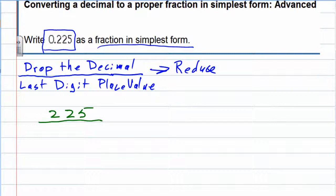225 that's my numerator and for the denominator I'm supposed to use the last digit's place value. Looking at our original decimal, the last digit was the 5 and that 5 is in the tenths, hundredths, in the thousandths place.